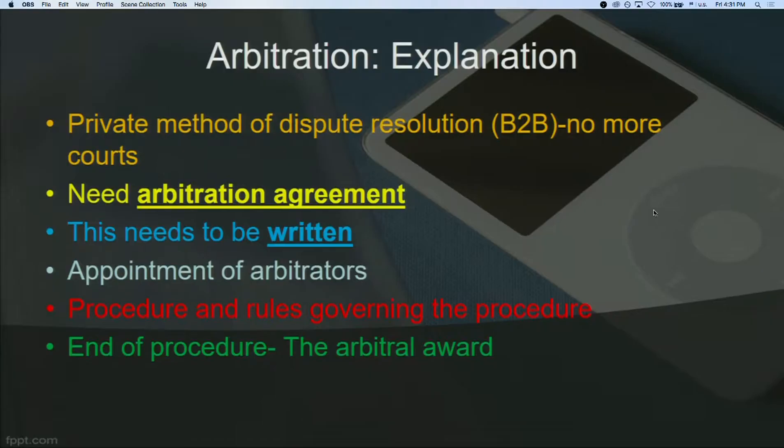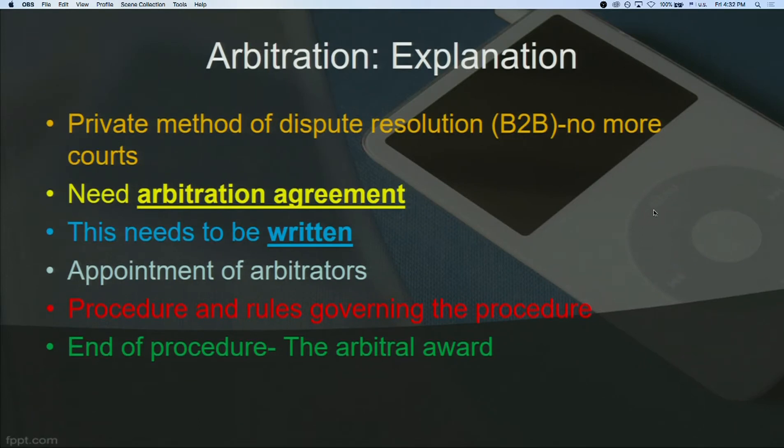To prove you've excluded the right to court, you need an arbitration agreement, and it needs to be in writing. The parties have the right to choose and appoint their arbitrators — normally one or three — and also have the flexibility to choose whichever procedure and rules govern the process. At the end, we get a decision called an arbitral award. So we have an arbitration agreement, proceedings, and an arbitral award — quite similar to court proceedings, just private.